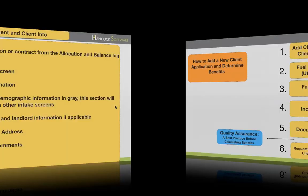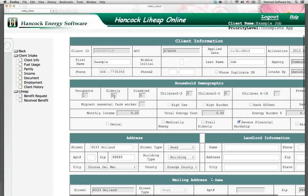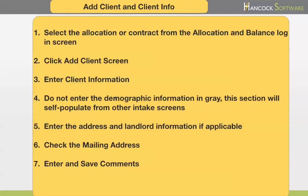To review: we selected the contract or allocation after we logged in. Then Step 2, we clicked to add client. Step 3, we entered client information. Step 4, we remembered to skip the demographic information in gray, because that will populate from the information we enter later on the other intake screens. Step 5, we entered the mailing address, the physical address, and the landlord information. If the mailing address was the same, we checked the box. Finally, we entered and saved comments.